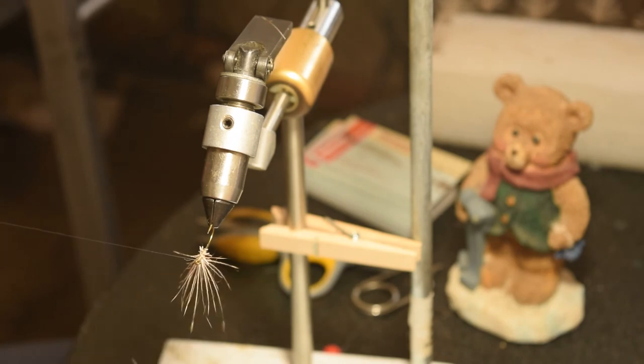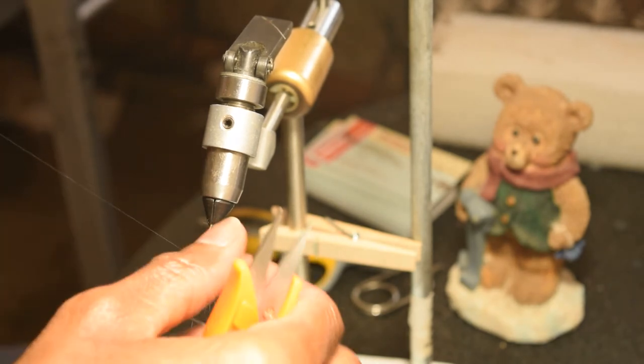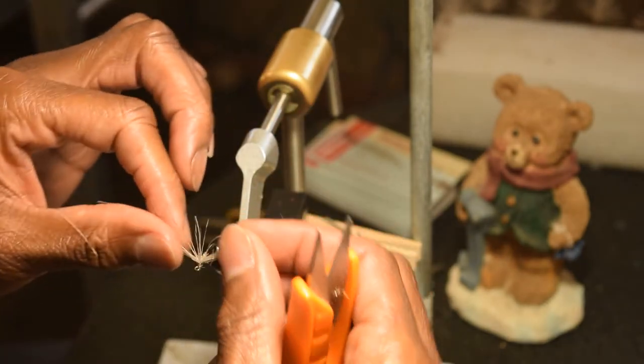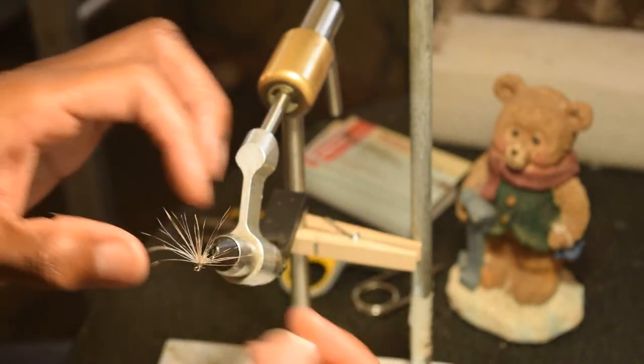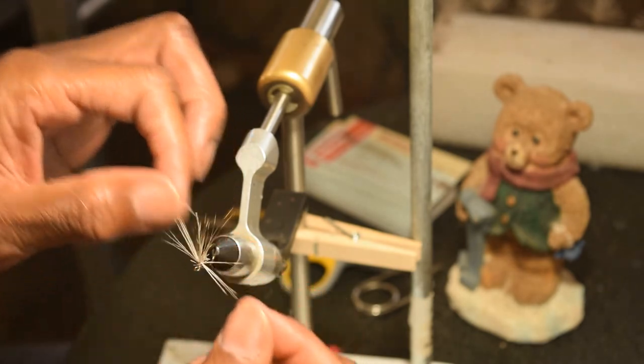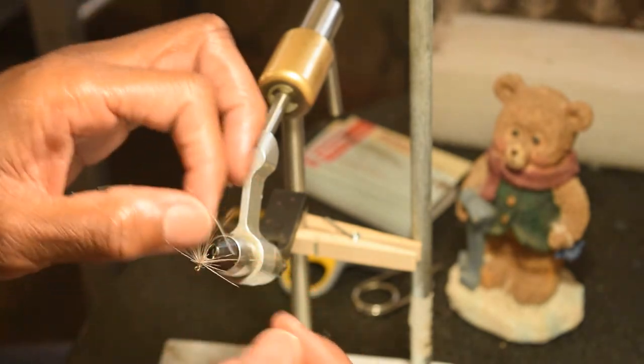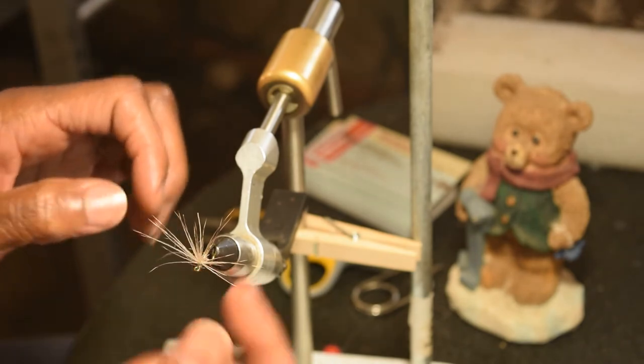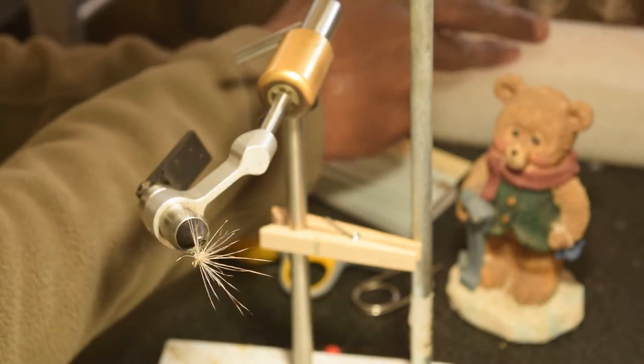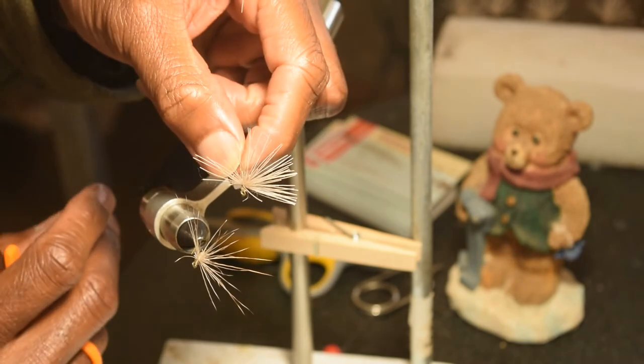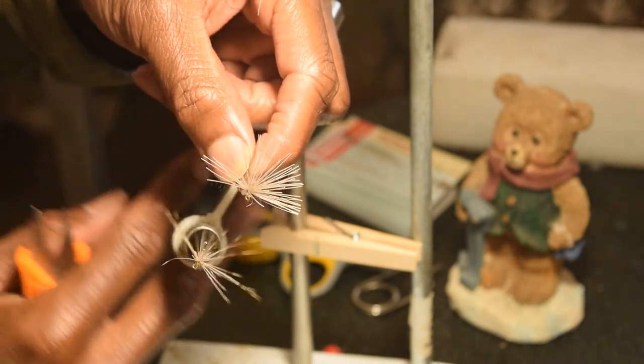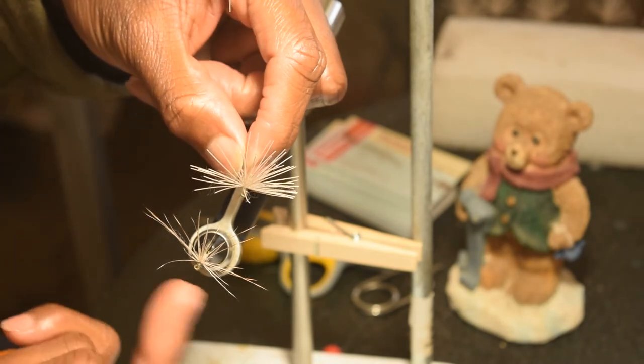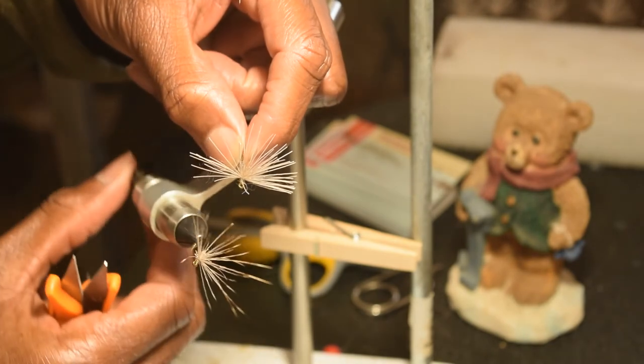One of the things this fly does is give me more vibration in the water, gives me more flotation in the water. But then what we do is we're not going to clip that off. What we can do is splay that out some. Compared to say this guy, much more delicate, you know. This will be more flotation, this will be more subtle, more realistic looking.